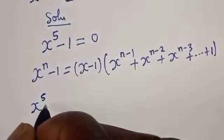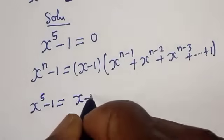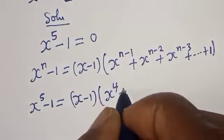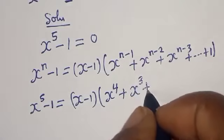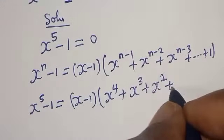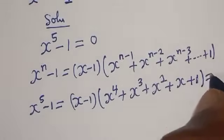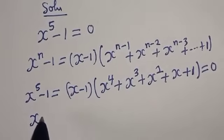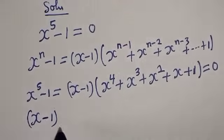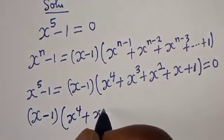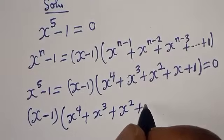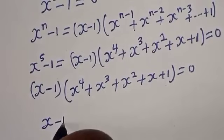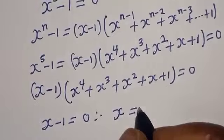So x raised to power 5 minus 1 is equal to x minus 1, bracket, x raised to power 4 plus x raised to power 3 plus x squared plus x plus 1, is equal to 0. Now there are two cases: x minus 1 is equal to 0, therefore x is equal to 1.